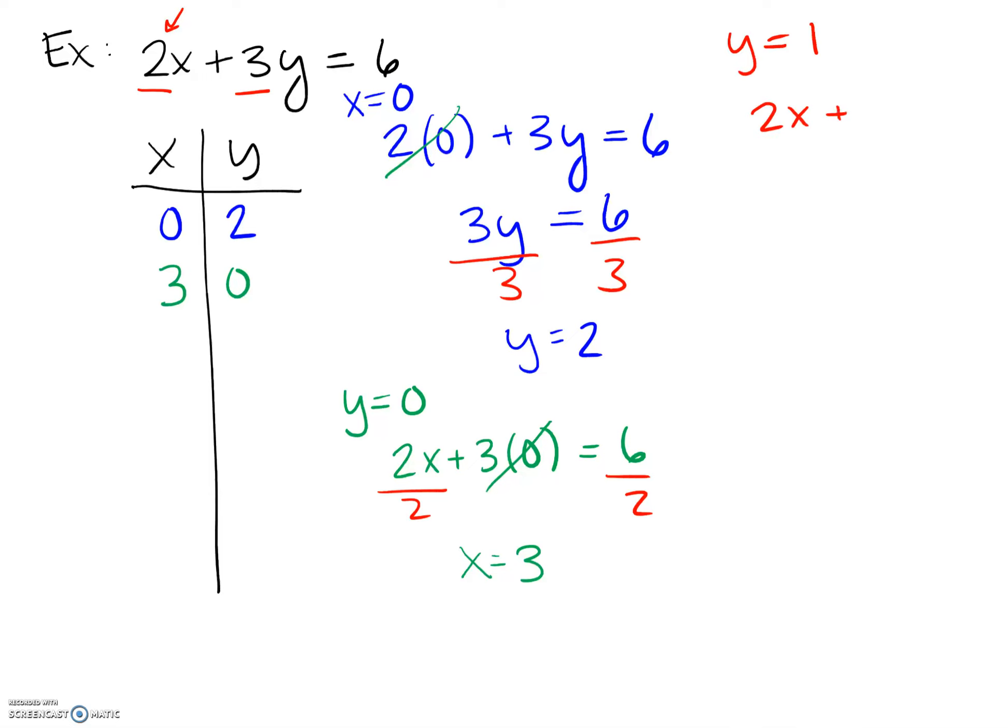We get 2x plus 3 times 1 is equal to 6. And when we go to solve this thing out, right now we should already be recognizing that bad things have happened. We have made ourselves a fraction or a decimal. We don't necessarily want one. Now this is not terrible or bad.